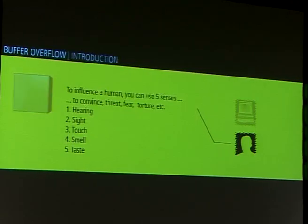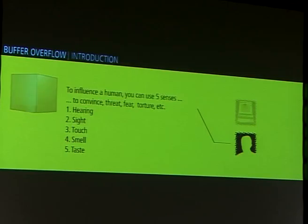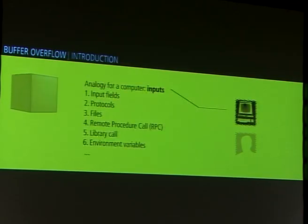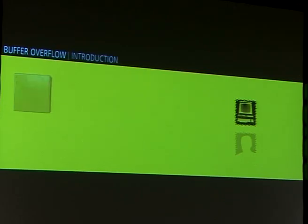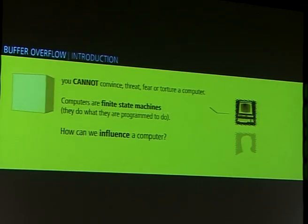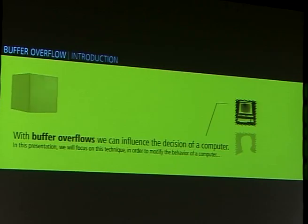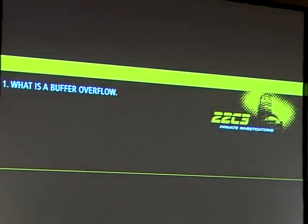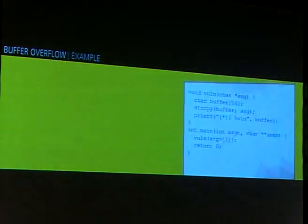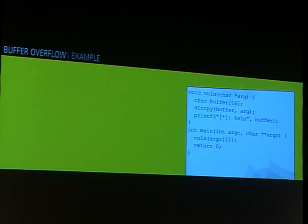But there is another solution to modify the decision of a computer. If we look at the case of a human, you can use senses — hearing, sight, touch, smell, taste — and with them you can try to convince the human, threaten him, make him fear, or torture him, always in order to influence his decisions. With computers, you have inputs like input fields, protocols, files, RPCs, library calls, or other stuff. But in fact you cannot really convince, threaten, or torture a computer — they are finite state machines. So the solution, and now the most used, is buffer overflows.